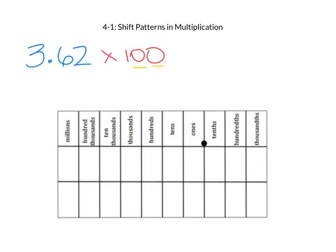First, let's put 3 and 62 hundredths into our place value chart: 3 whole and 62 hundredths. Since each digit will shift to the left two places, the 3 in the ones place moves two places to the hundreds place, the 6 moves two places to the tens place, and the 2 moves two places to the ones place. Now we have 362 whole, so there is no reason to insert any zeros because there are no blank places in between the whole numbers and the decimal number parts.